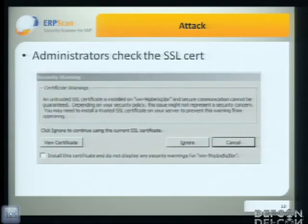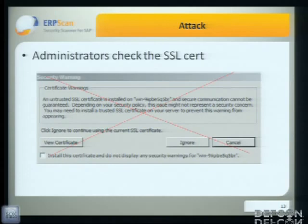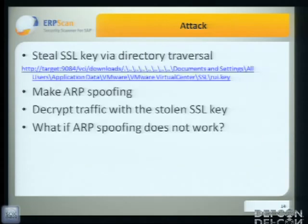But the administrators of this network were very clever — they had added the certificate to trusted and didn't click the ignore button. So that didn't work. We found another way: we could still read via directory traversal and perform ARP poisoning to decrypt traffic.